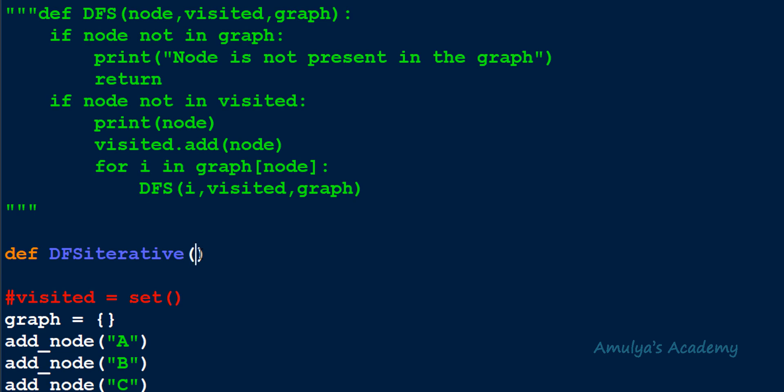In the DFS algorithm, first we need a starting node — we need to know from where to start the traversal. We can choose any node of the graph as the starting node, so when we call the DFS function we will mention the starting node. That's why the first parameter will be the starting node, just like we did in the recursive function.